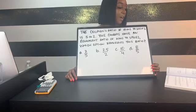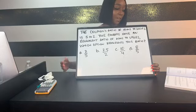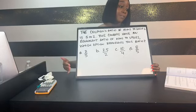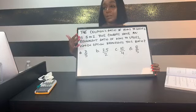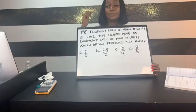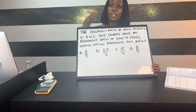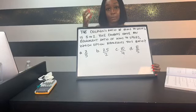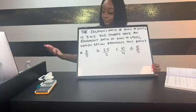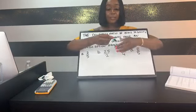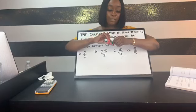The question says: the Dolphins' ratio of wins to losses is 5 to 2. The Cowboys have an equivalent ratio of wins to losses. Which option represents this ratio? The dead giveaway is the phrase 'equivalent ratio' — that should be a trigger. When you're studying, you should create triggers in your mind. When you see 'equivalent ratios,' you should automatically know to cross multiply. We're cross multiplying to see which side balances out. Also, since they gave us 5 to 2, if you see 2 to 5, that's the reciprocal — automatically cancel that out.